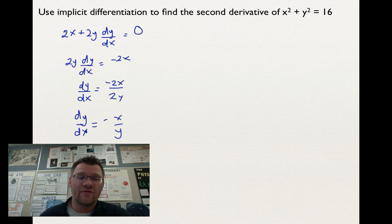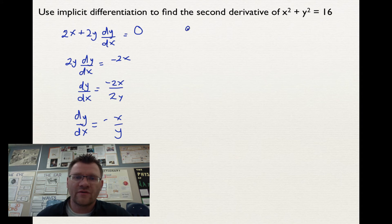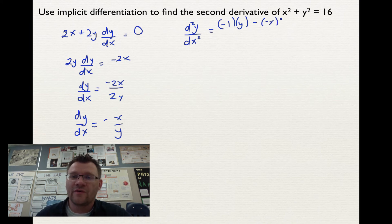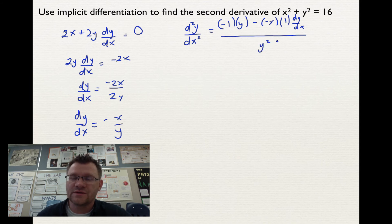Now I need to take the second derivative, meaning I take the derivative of negative x over y using the quotient rule. So d squared y over dx squared: take the derivative of the top, which is negative 1, leave the bottom y, then subtract the top negative x multiplied by the derivative of the bottom. The derivative of y is 1 times dy/dx. That's all over y squared.